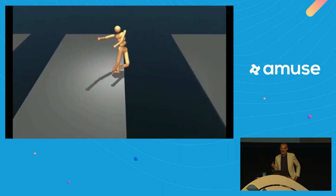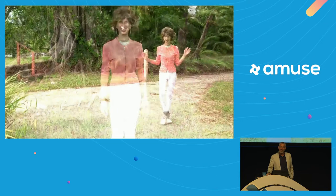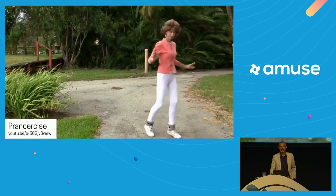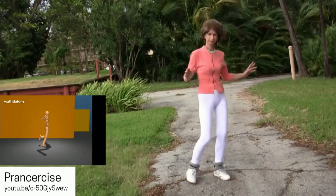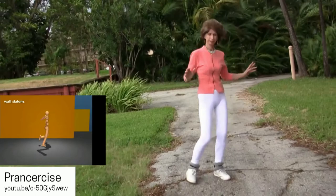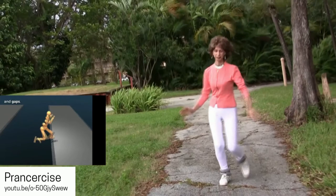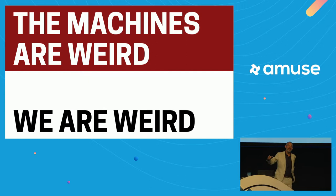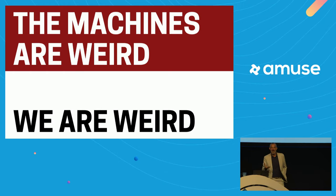Then again, we also come up with some pretty strange approaches to locomotion ourselves — witness the Prancercise craze of 2013, straight out of Florida. When people are so often unpredictable and eccentric, how can we expect machines always to make sense of what's happening? If the machines are weird, it's in part because we are weird — they only know what we show them and have to make sense of the patterns within that.